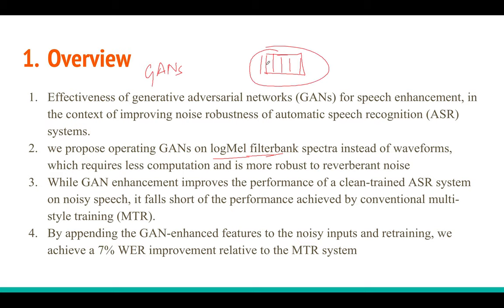Spectrograms are easy to handle because in one second of audio at 16 kHz you get around 16,000 samples, but with a spectrogram using a 25ms window and 10ms shift you get only around 100 frames per second, which requires less computation. This approach improves the performance of a clean-trained ASR system on noisy speech: you have a speech recognition engine trained on clean data, but if you use this GAN enhancer to clean the noisy test audio first, the performance will be good.